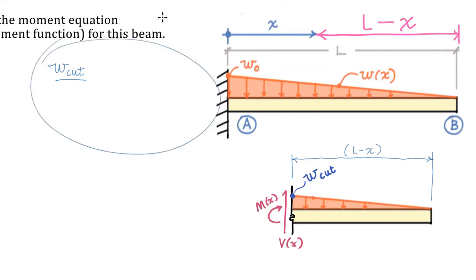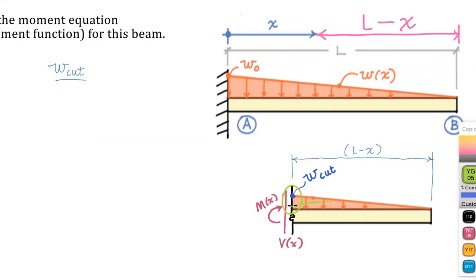I want this is to that as this is to that. That's all I'm doing. So in math, that would mean W_cut is to L minus x as w_0 is to L.